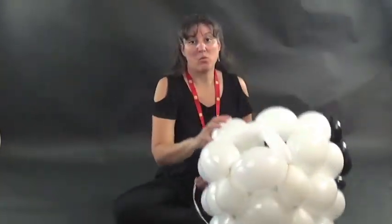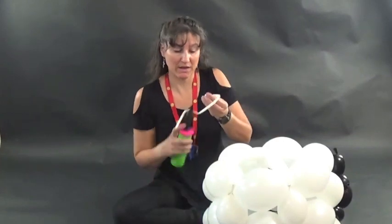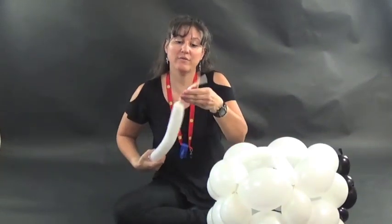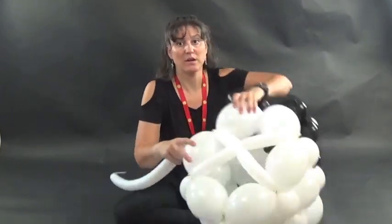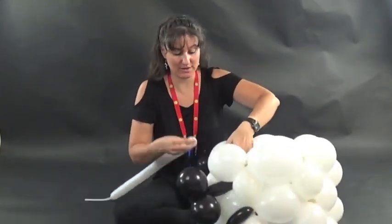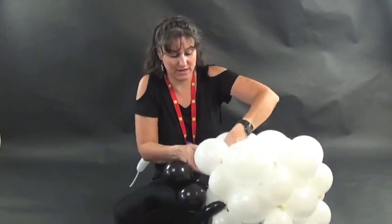So I was able to do that with one 260. I'm going to grab my next white 260 and inflate it so you have about an eight to nine finger tail. Take the nozzle and tie it into the last connection that doesn't have a white 260 attached to it.